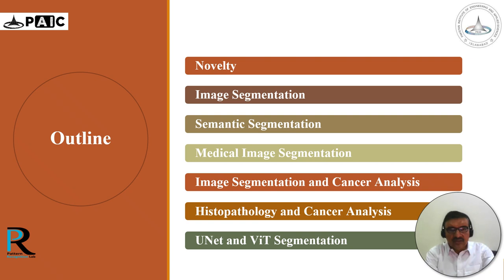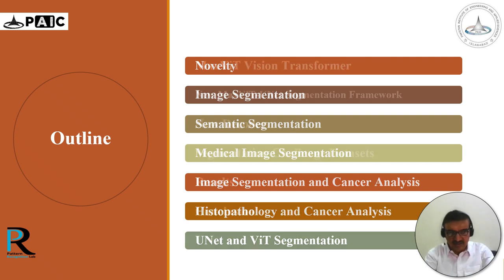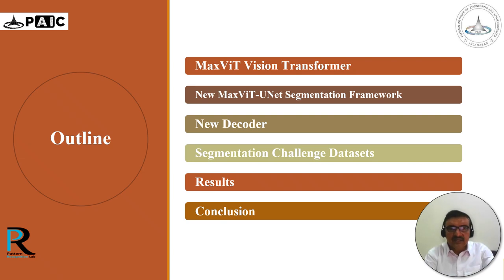The layout of this talk: first I am going to discuss the novelty of this work, then a brief introduction of image segmentation, semantic segmentation, and how we use this for medical image segmentation, image segmentation and cancer analysis, as well as histopathology and cancer analysis. Then the two famous architectures — the UNet framework and the vision transformer — followed by the very recent MaxVIT vision transformer and our new MaxVIT-UNet segmentation framework, the new decoder architecture, testing on challenging datasets, results, and conclusions.